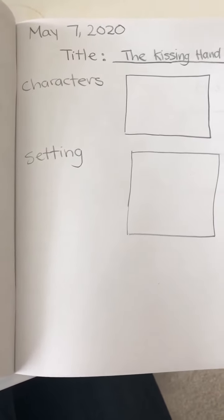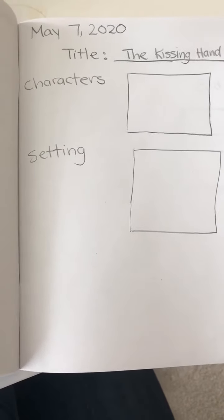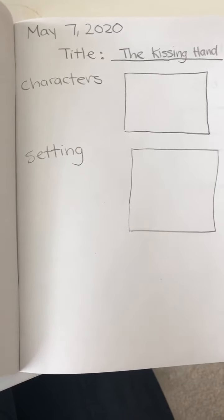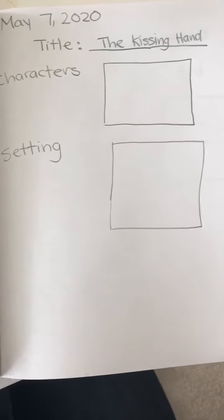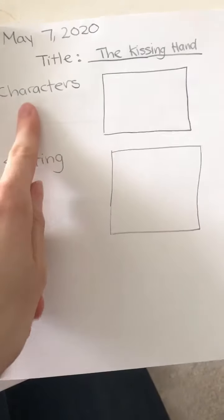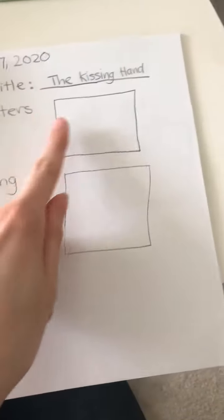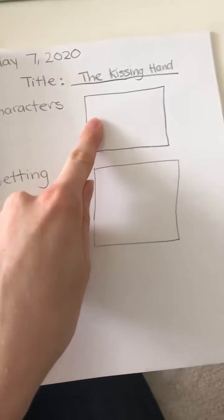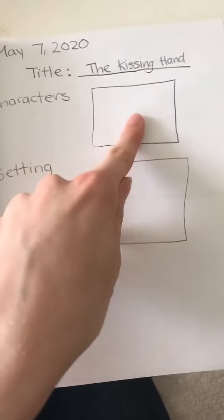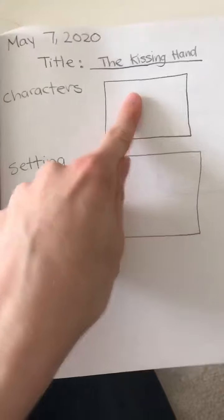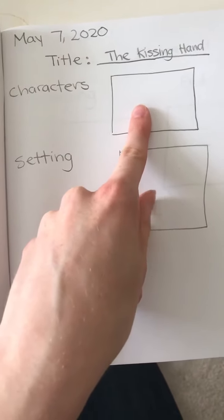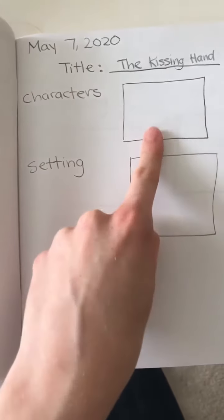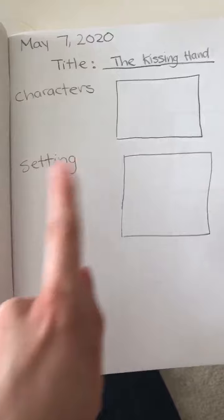This is how I chose to set it up — you can do it a different way if it works for you, or you can do it like this. I wrote down 'characters' and drew a little box. In that box you can draw a picture of the characters and try to write out their names.